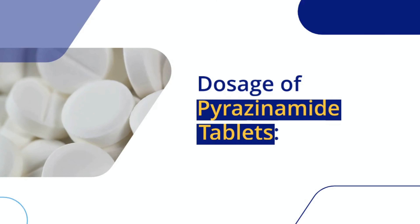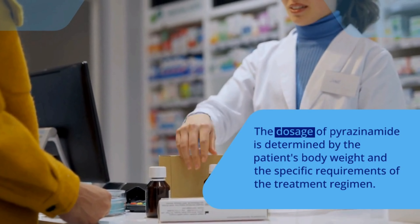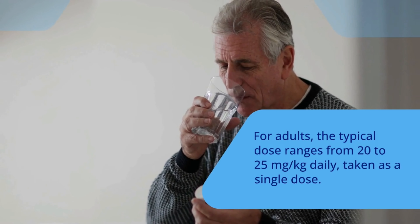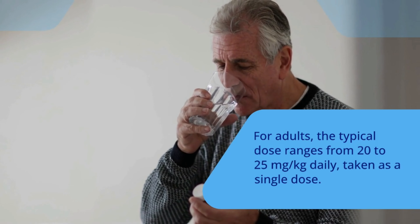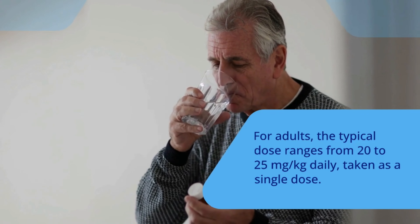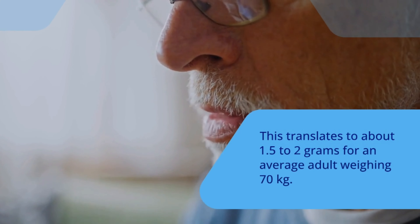Dosage of pyrazinamide tablets. The dosage of pyrazinamide is determined by the patient's body weight and the specific requirements of the treatment regimen. For adults, the typical dose ranges from 20 to 25 milligrams per kg daily, taken as a single dose. This translates to about 1.5 to 2 grams for an average adult weighing 70 kilograms.